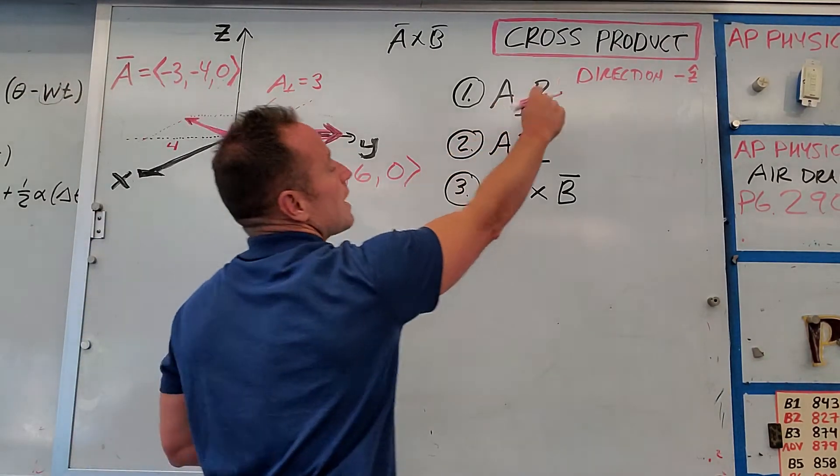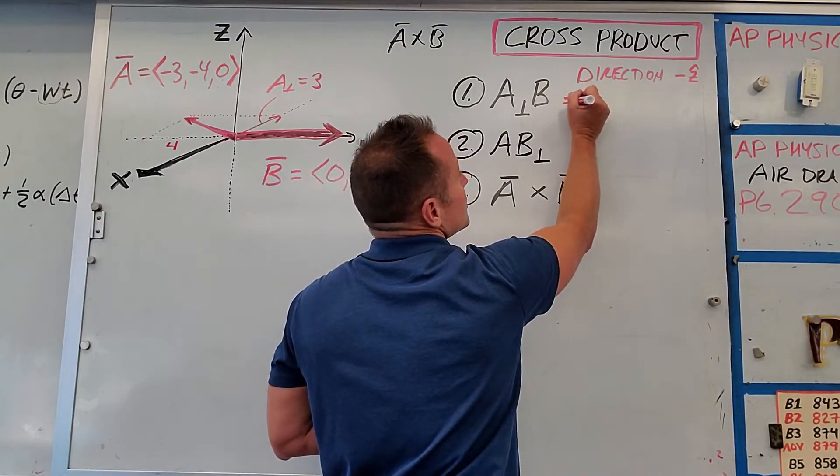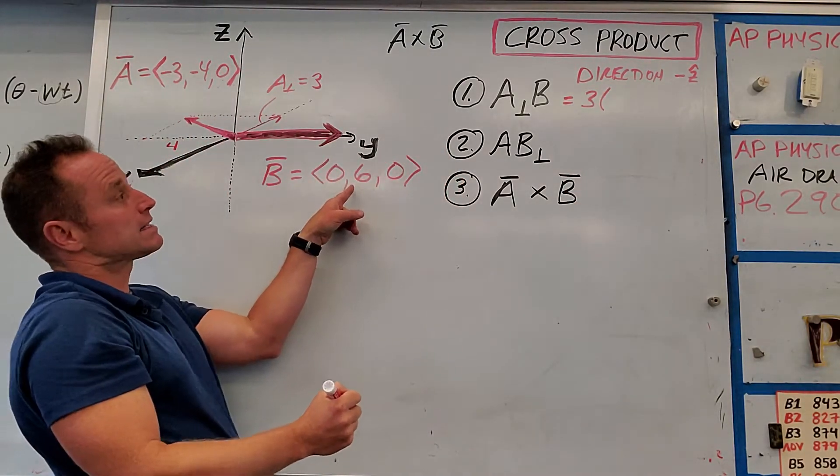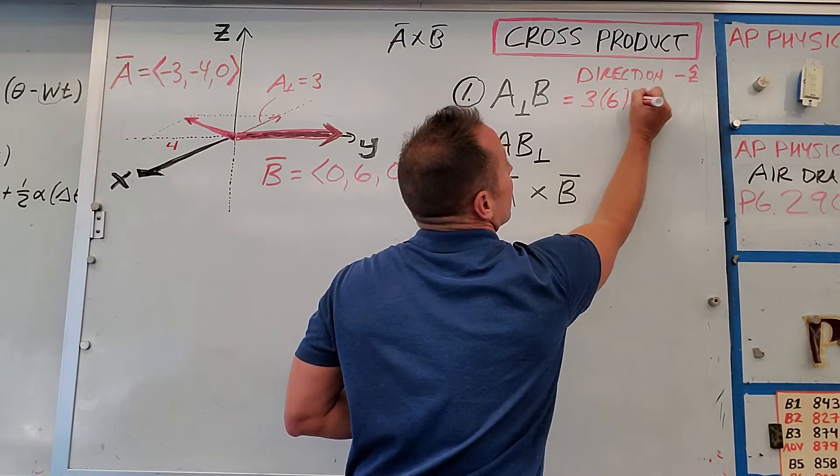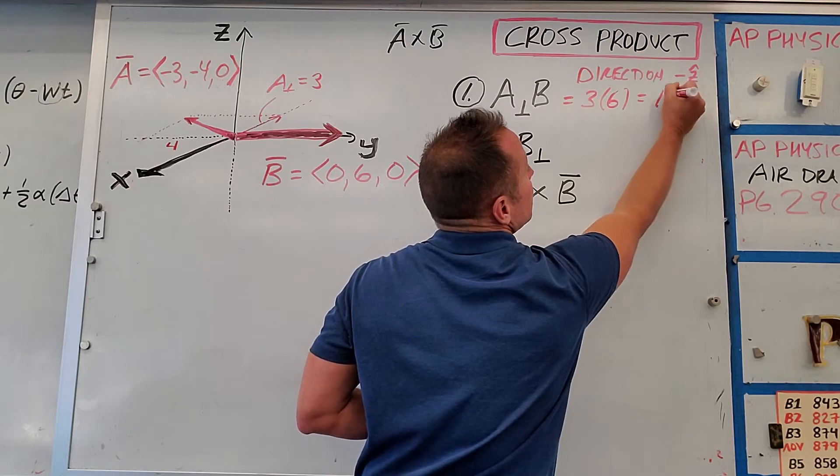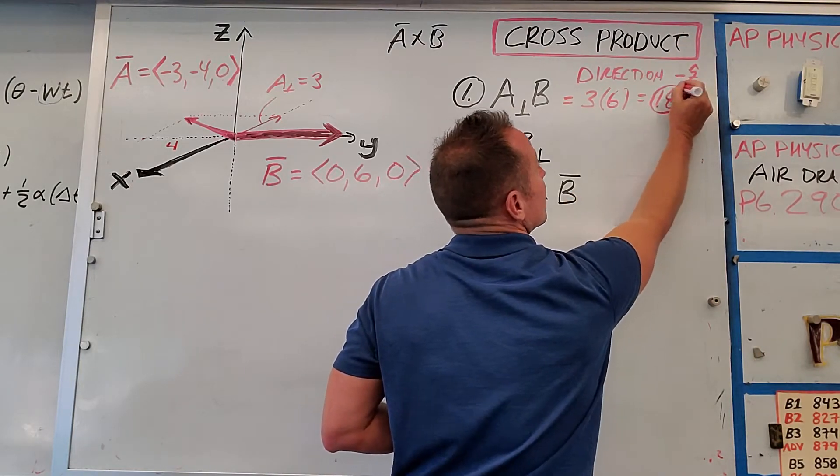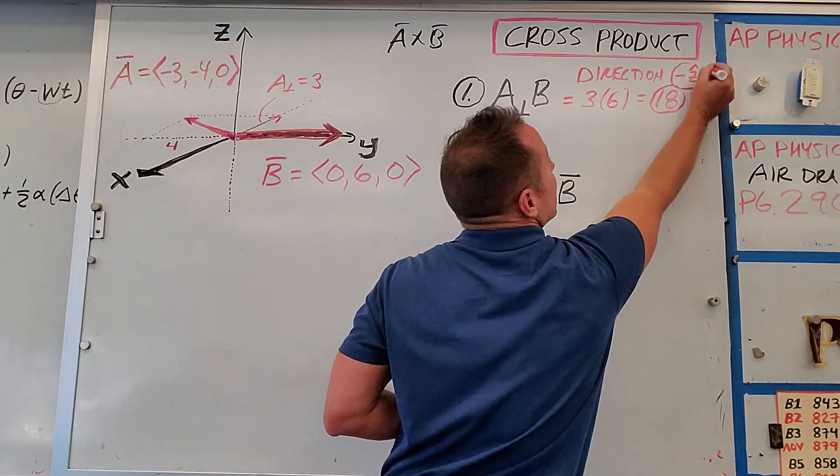And so if you want to find A perp B, that's just going to be then three times, and then the magnitude of B is six. So it's going to be 18 units in the negative Z direction. So this is the size of the cross product, and this is the direction of the cross product.